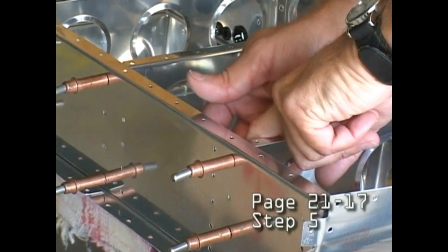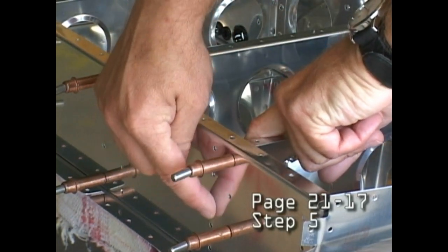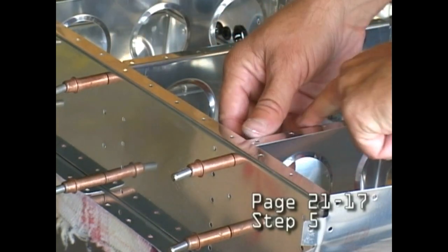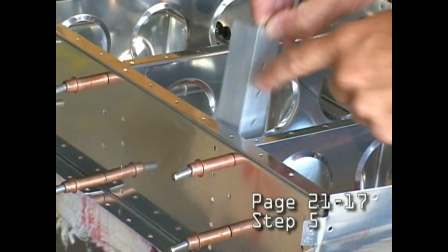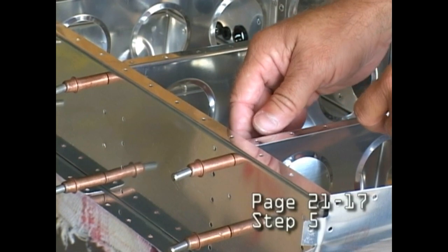What we're going to do then is match drill the pre-drilled holes in the front of the bulkhead into the face over here. We'll cleco this in place.